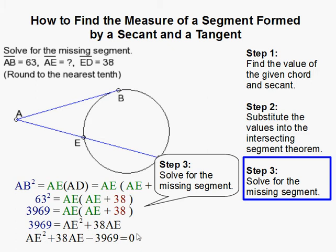Moving everything gives us AE squared plus 38AE minus 3969 equals zero. If you plug it into the quadratic formula, you get two answers.